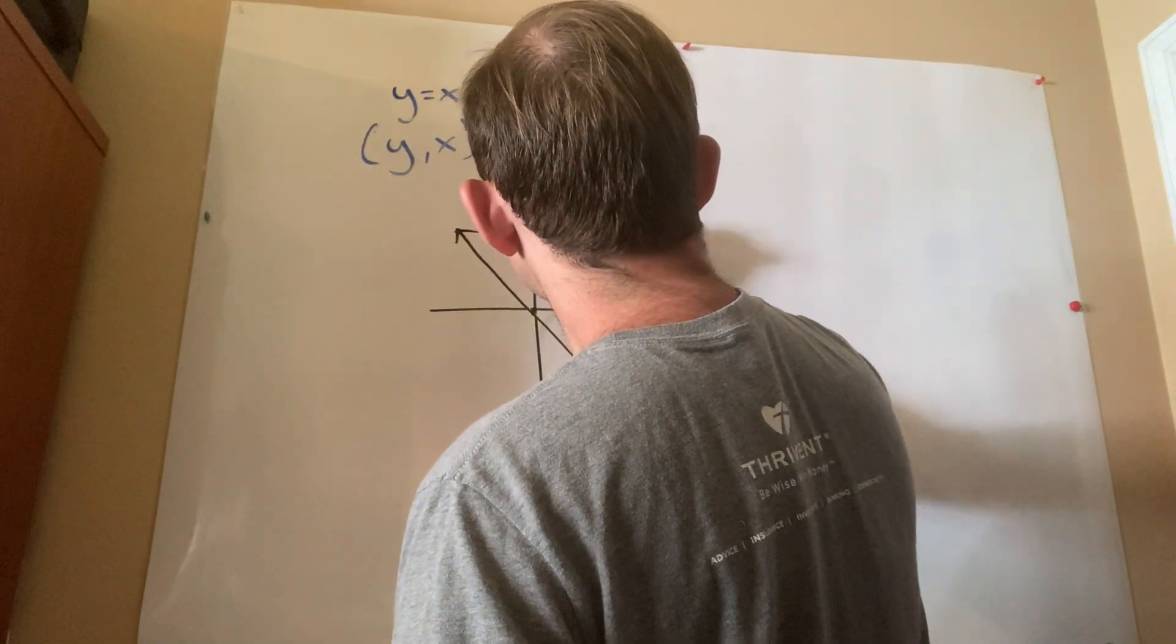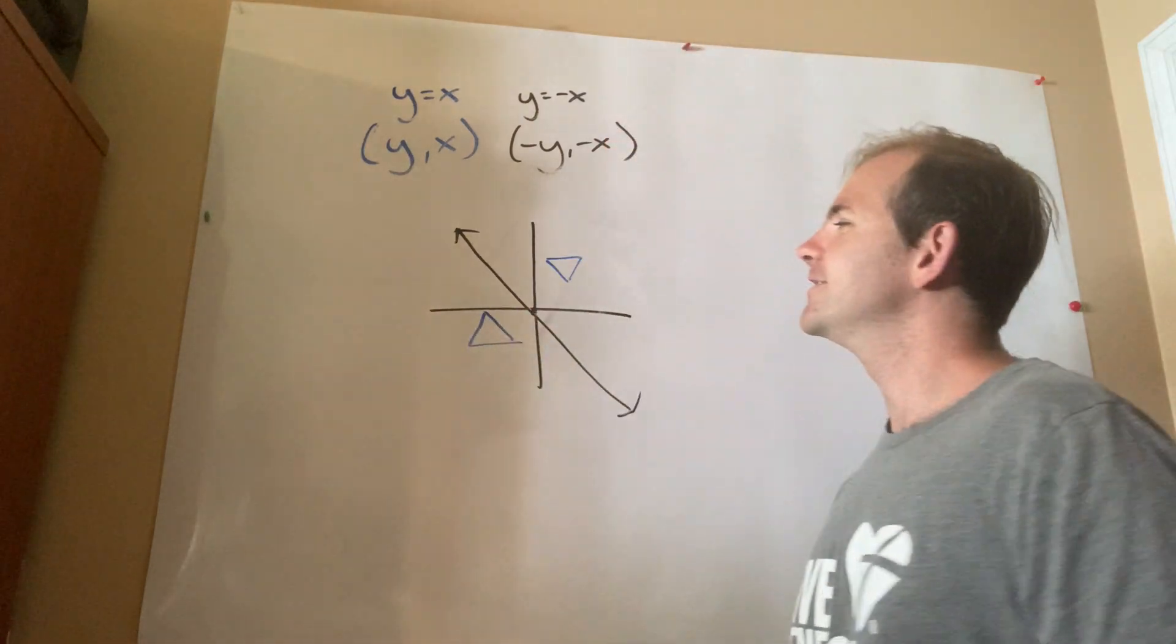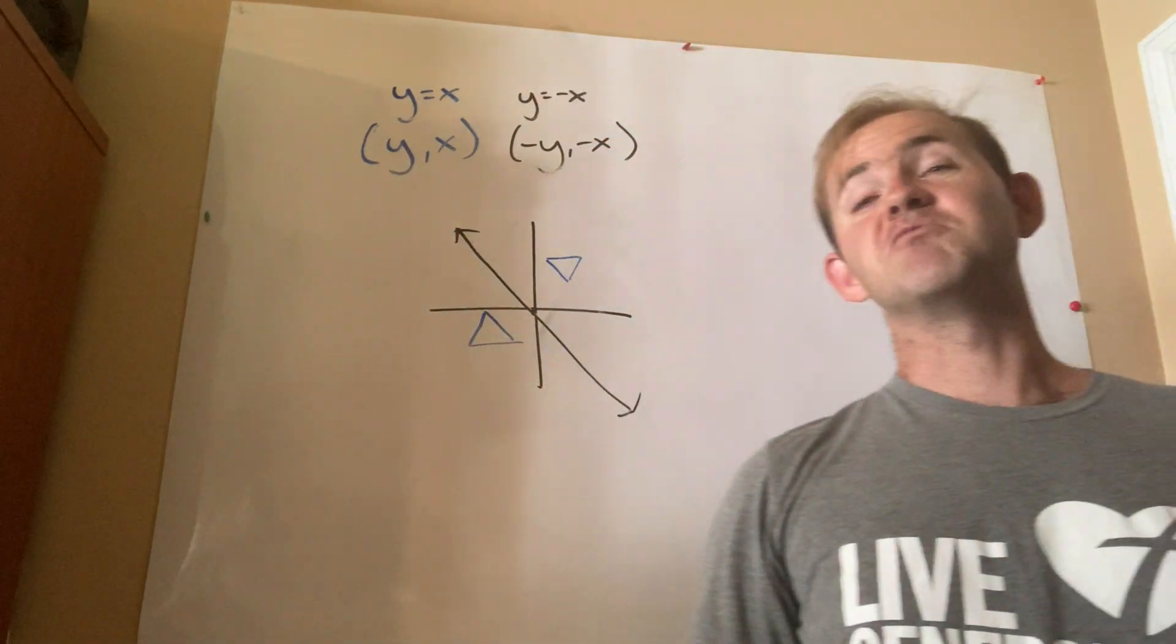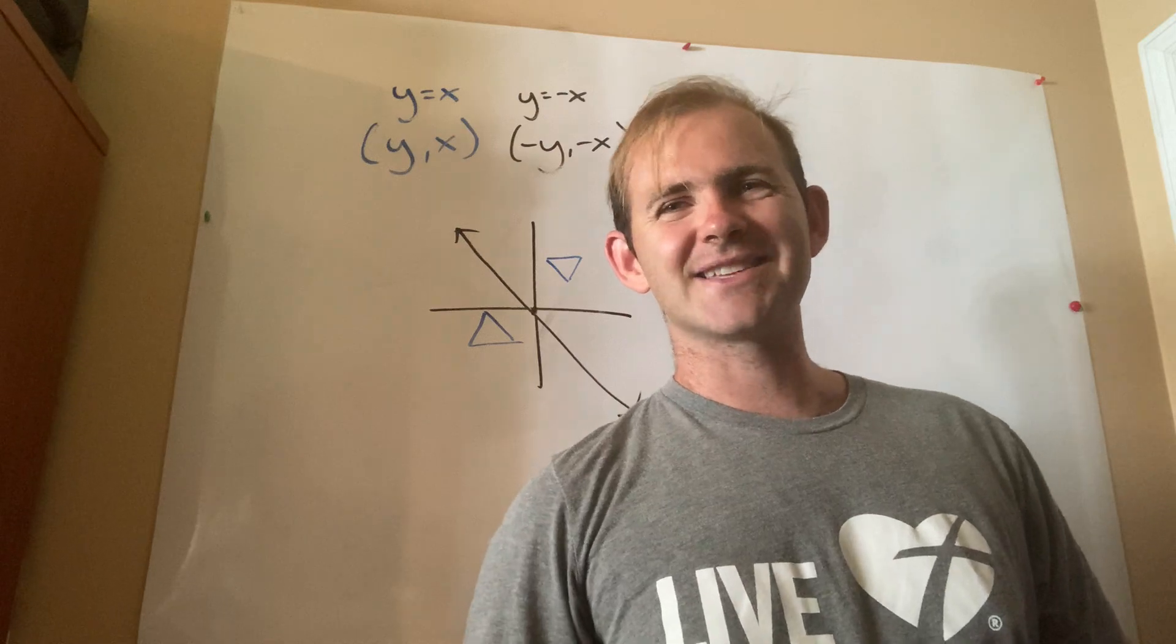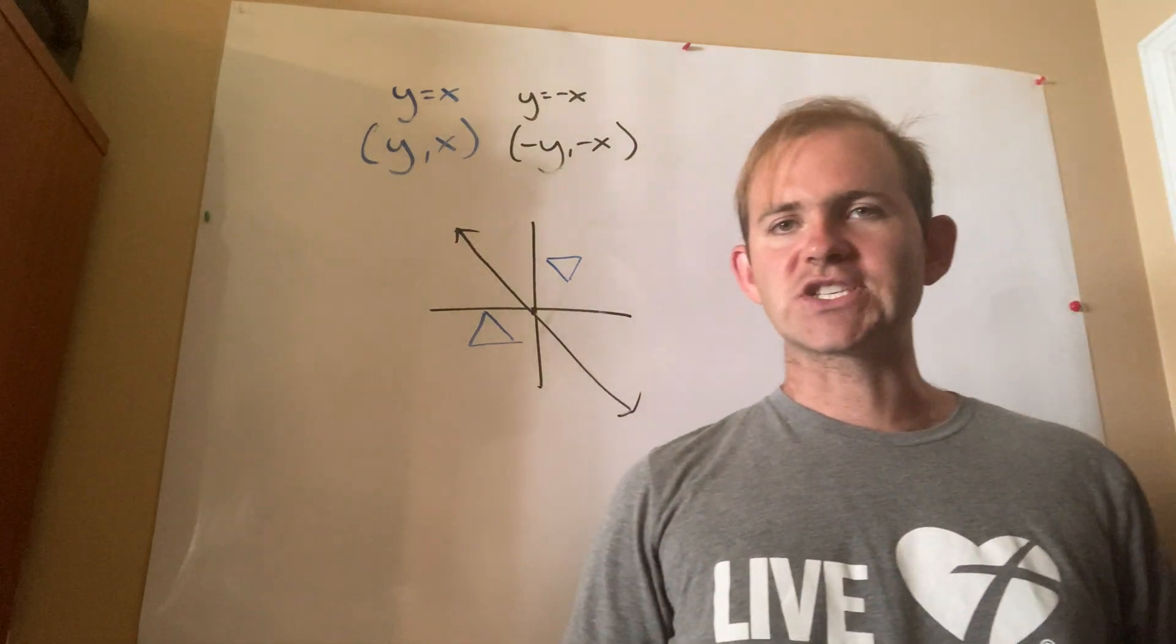And so, if I were to try to reflect something over it, it would look something like this. So there's a triangle, and there's a triangle. They should be the same size, the same distance away, right? But that's what it actually looks like.